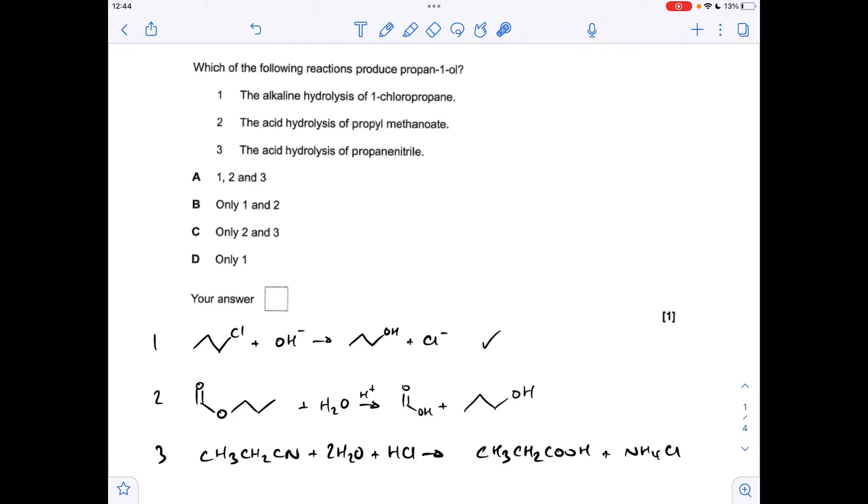Reaction 2, the acid hydrolysis of propyl methanoate. There's the reaction and you can see it's making propane 1-ol again. And the third reaction, the acid hydrolysis of propane nitrile. There's the equation. It hasn't made propane 1-ol. It's made propanoic acid and ammonium chloride. So 1 and 2 only. The answer was B.